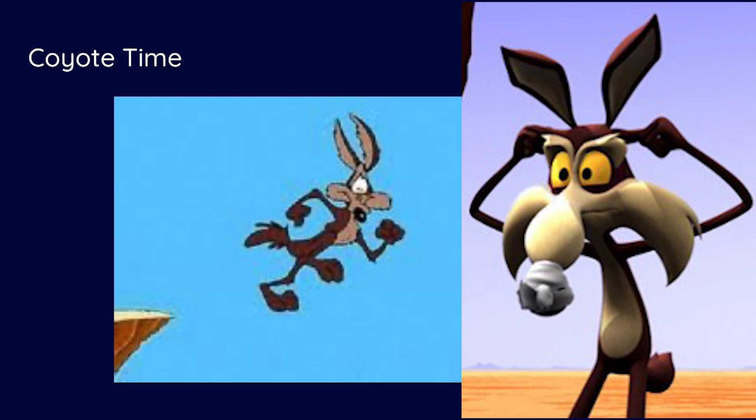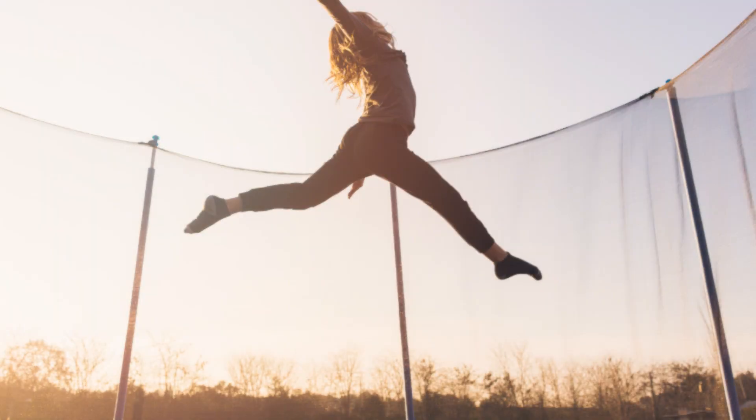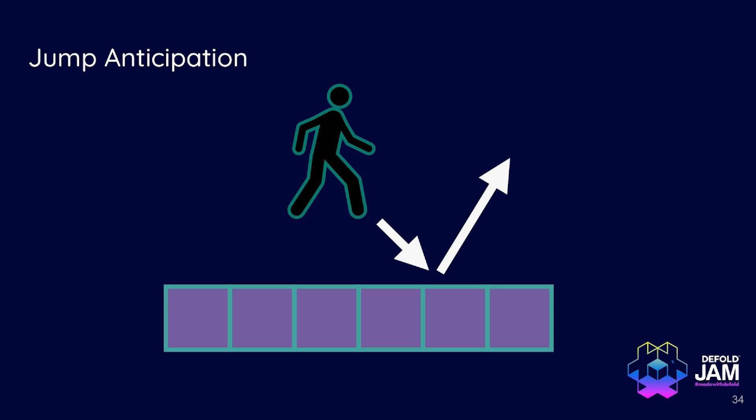Of course, there's coyote time. I'm sure you all know about that. It's a small timer after the character leaves the platform, in which you still would process the jump button. And the same in reverse. Jump anticipation is when you press the jump button, while the character is still in the air, and you track the time and check the time when the character actually lands on the platform. If that value is less than some amount, reasonable amount, like, I don't know, 100 milliseconds, 200 milliseconds, you remember that the jump button was pressed, and if it's still pressed, make the character jump. So it's also a very good technique for the player to feel more fluent, more enjoyable to play your game.